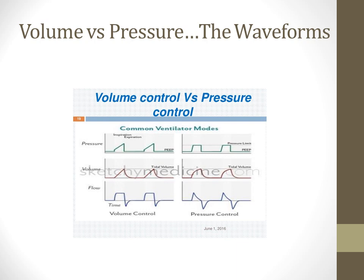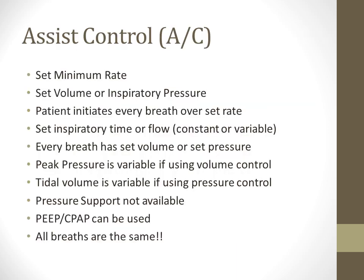In volume control you're setting a minimum rate, volume, and inspiratory pressure or Delta P — it just depends on your vent manufacturer. The patient is able to breathe over if they choose to, if they're not paralyzed or heavily sedated. You can set inspiratory time or inspiratory flow. Every breath has a set volume or set pressure. Your peak pressures are variable if using volume control, and tidal volume varies if using pressure control, because tidal volume is based on static compliance of the lungs.